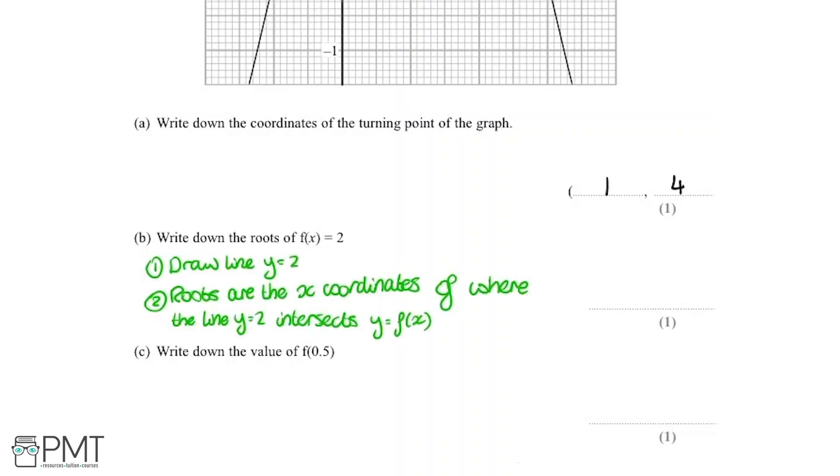Firstly, we're going to draw the line y equals 2, because we need to find the roots of when f(x) equals 2. Secondly, we're going to look where the line y equals 2 intersects the curve, and the x-coordinates of those intersection points are the roots. Hopefully it will become clear when we do it.